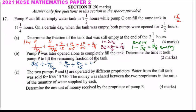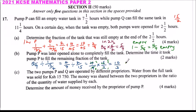This equals 4 over 9 multiplied by 15 over 2. Simplifying: 4 divided by 2 is 2, 15 divided by 3 is 5, 9 divided by 3 is 3. So you get 10 over 3, which equals 3 and a third hours. That is the number of hours Pump P will take to fill the remaining tank, and you get 2 marks.